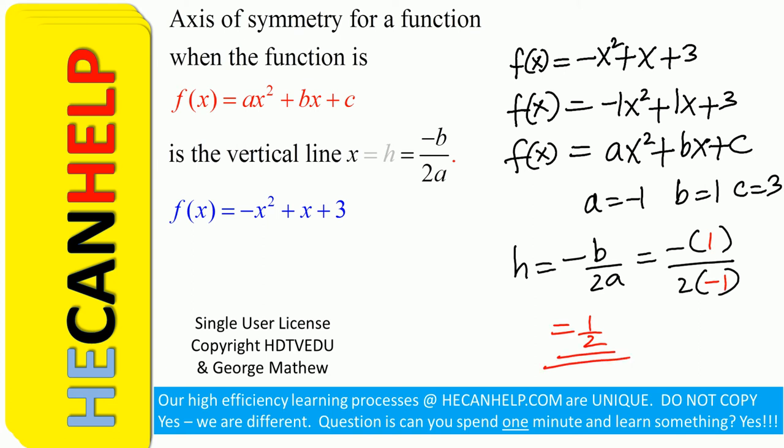So h = 1/2. What is the axis of symmetry for the function? When the function is -x² + x + 3, it is h = 1/2.